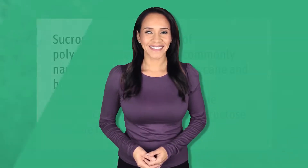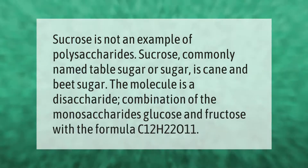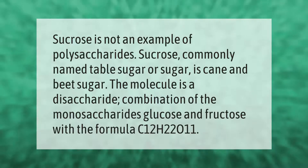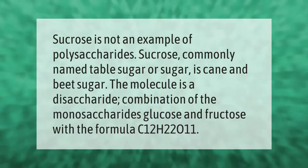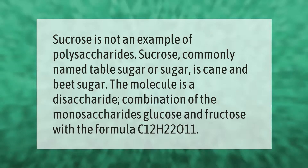Sucrose is not an example of polysaccharides. Sucrose, commonly named table sugar, is cane and beet sugar. The molecule is a disaccharide — a combination of the monosaccharides glucose and fructose — with the formula C12H22O11.